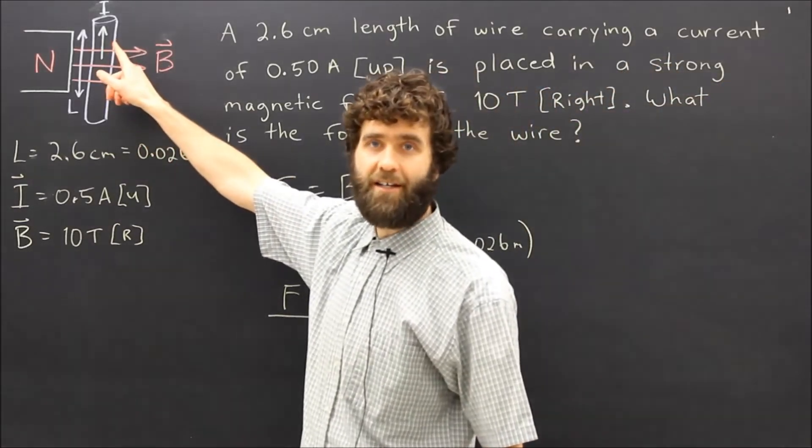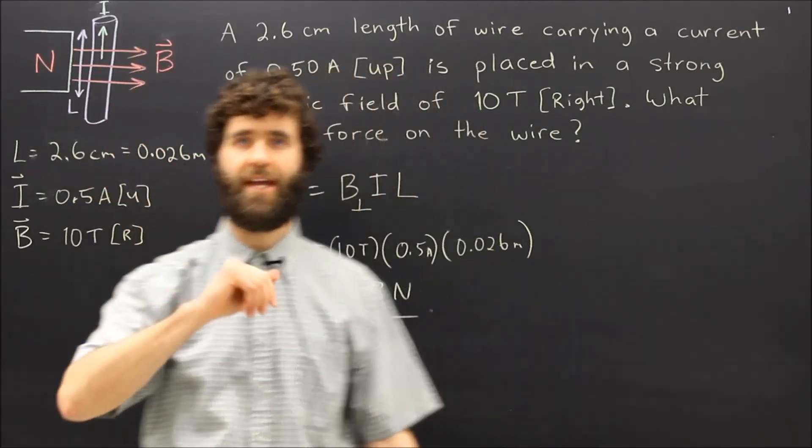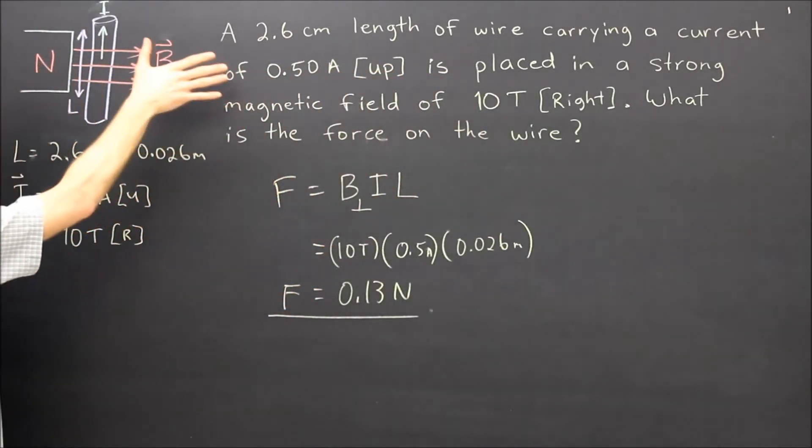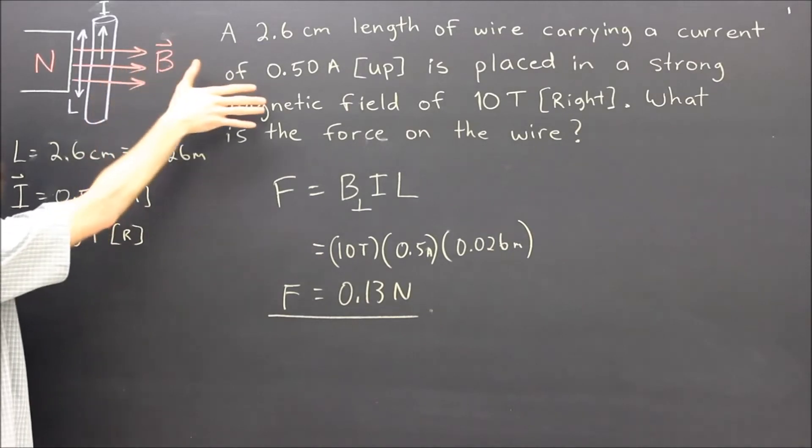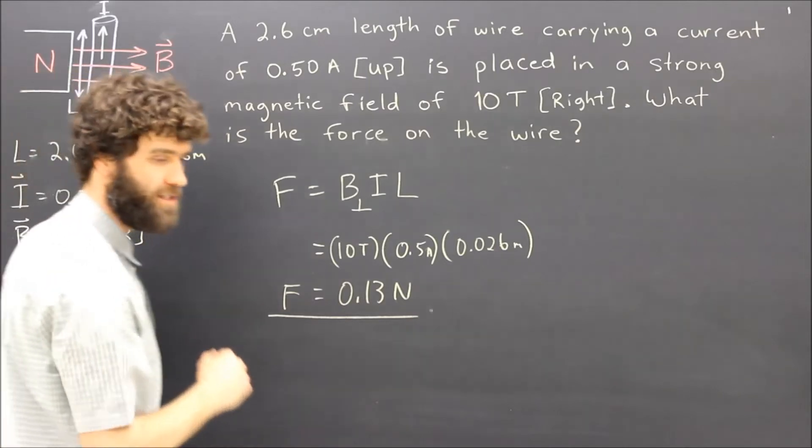With the given current I, that would be the conventional current going up, we use our right hand rule: current's going up, magnetic field is to the right, and the palm is pointed into the board. That means the direction of the force is into the board.